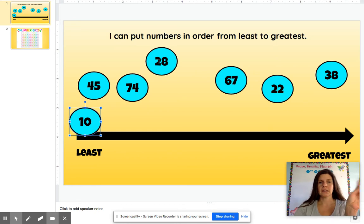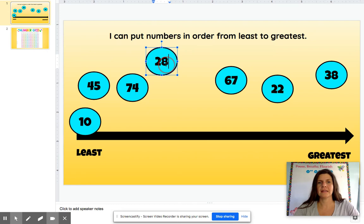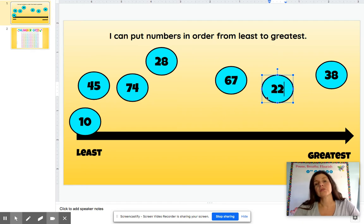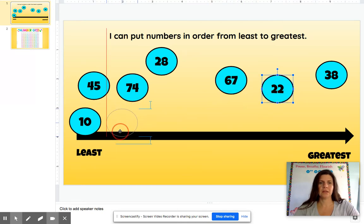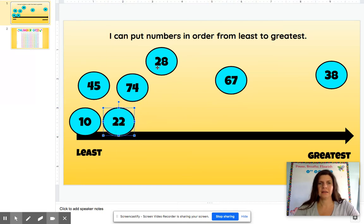Since there's a two in the tens place here and a two in the tens place here, I'm going to have to look at the ones place. So that is right there. See the eight. And then the ones place here is two. So now I know the 22 is less than 28. So I am going to move this one right here. And then I know 28 comes next.